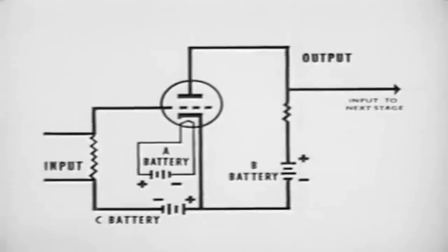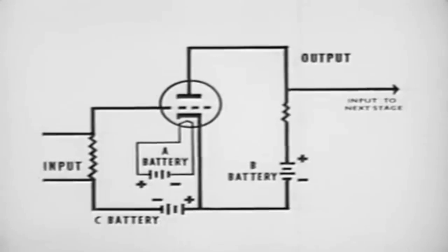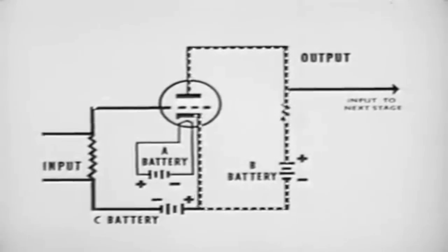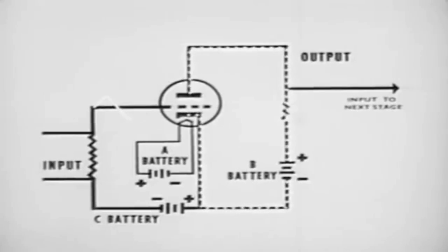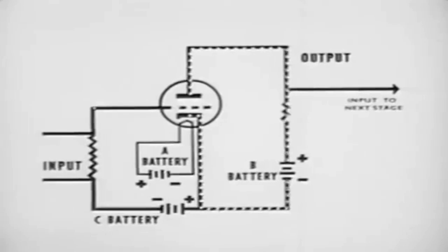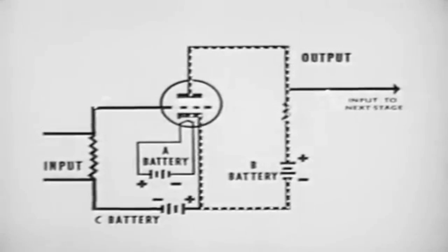The output is taken across the plate resistor and the power supply. The input is applied across the grid resistor. When a small signal is applied to the grid, it varies the difference in potential between the grid and cathode. This causes the current flowing through the tube to vary in accordance with the difference in potential between the grid and cathode. This varying current flow through the tube causes the voltage across the plate load to decrease and increase.